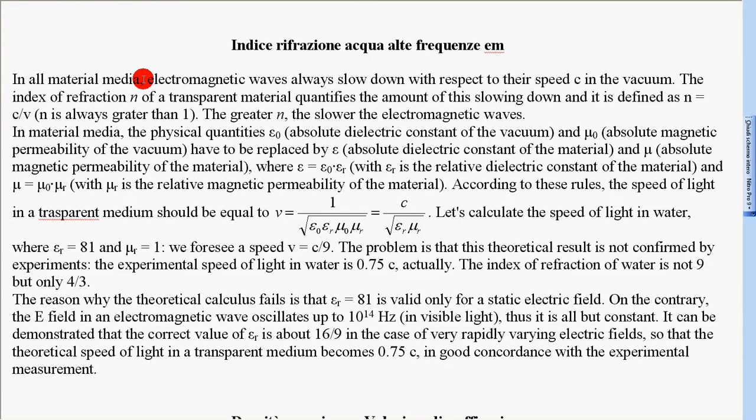In all material media, electromagnetic waves always slow down with respect to their speed c in the vacuum. The index of refraction n of a transparent material quantifies the amount of this slowing down and it is defined as n equal to c over v. n is always greater than 1. The greater n, the slower the electromagnetic waves.